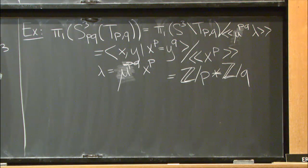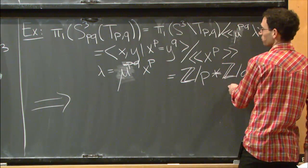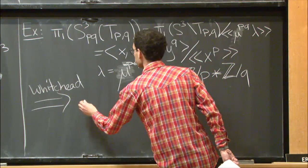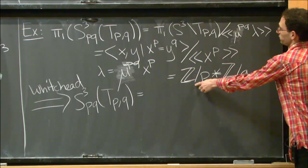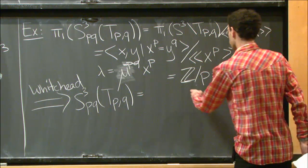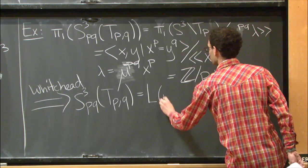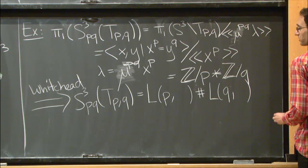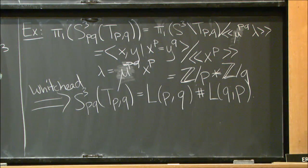There's a great fact about three-manifolds: if you see it in the fundamental group, it's there. Whitehead's theorem tells us that since the fundamental group looks like that of a connected sum, it is a connected sum. So we get that S³_(pq)(T_{p,q}) is a connected sum of two manifolds with cyclic fundamental groups. Appealing to geometrization, these are lens spaces: L(p, something) connect sum L(something, something), which turns out to be L(q, ·) connect sum L(p, ·).